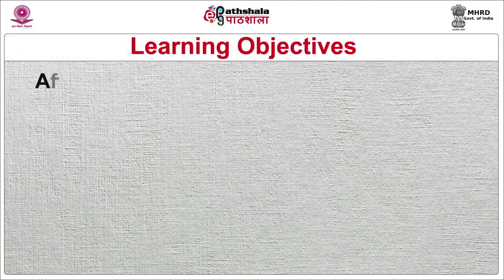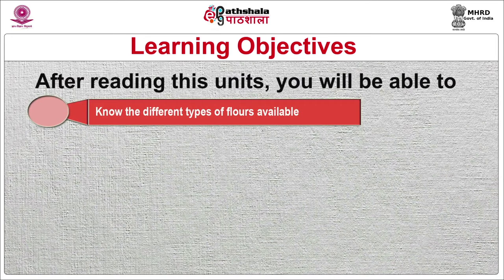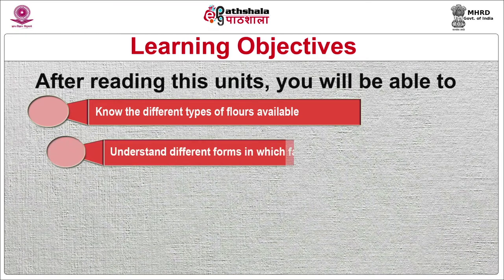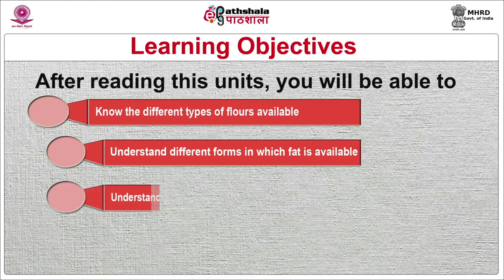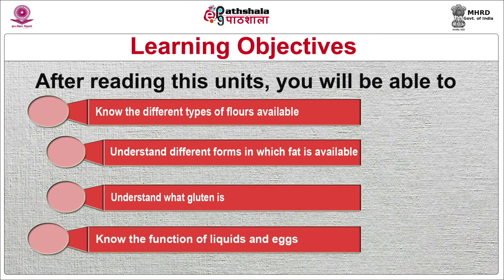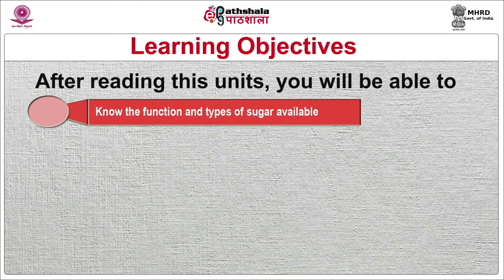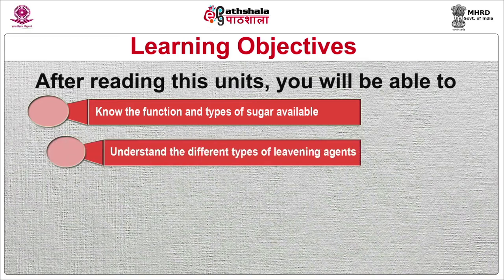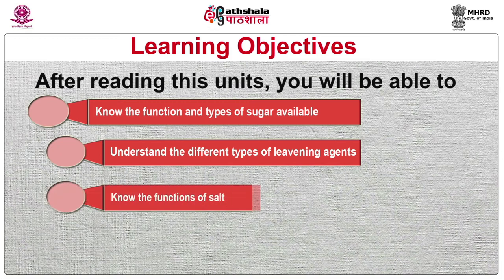The objectives of the module will be to know the different types of flours available, to understand different forms in which fat is available, to understand what gluten is, to know the functions of liquids and eggs, to know the functions of different types of sugar available, to understand the different types of leavening agents, and to know the functions of salt.